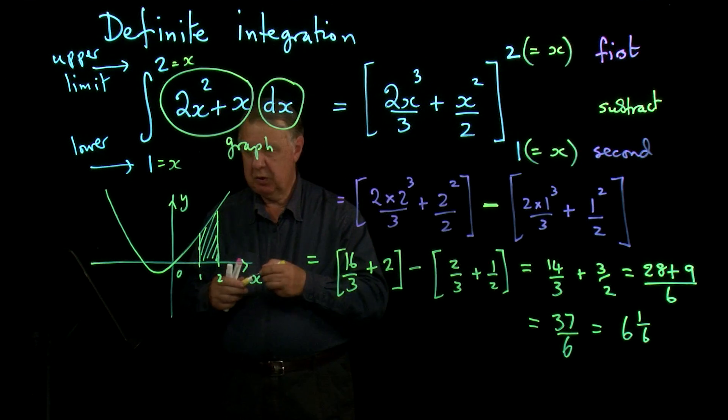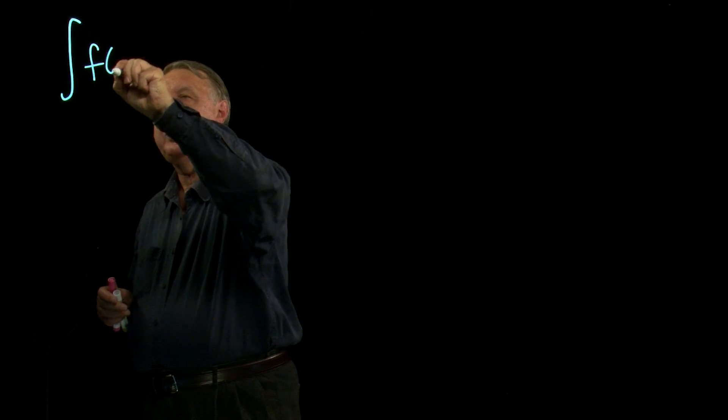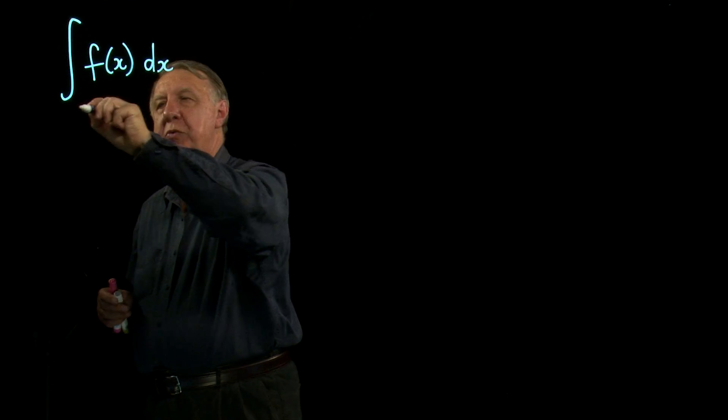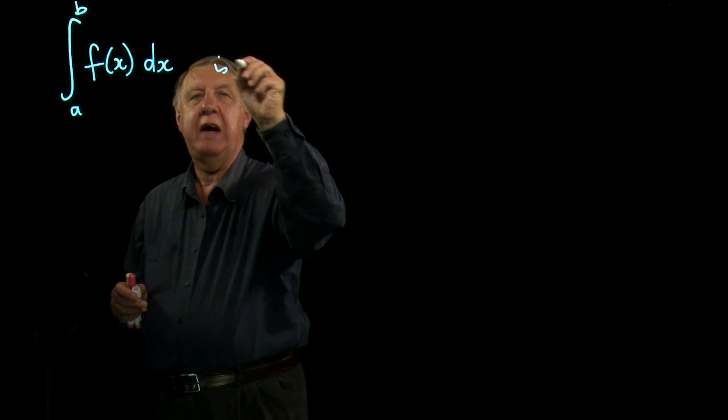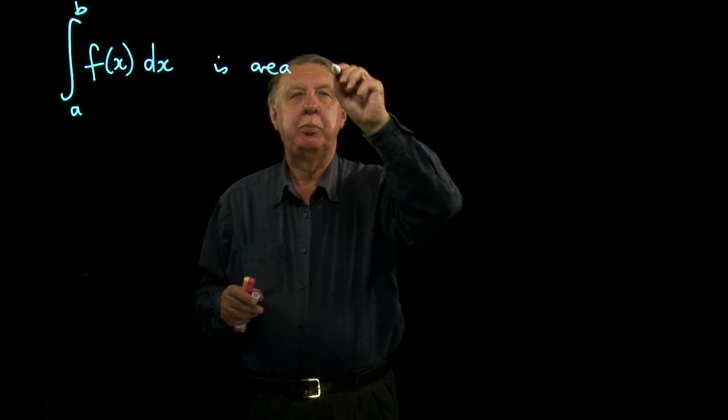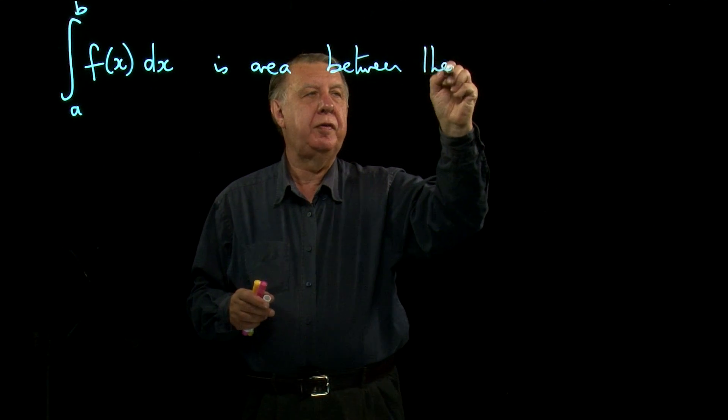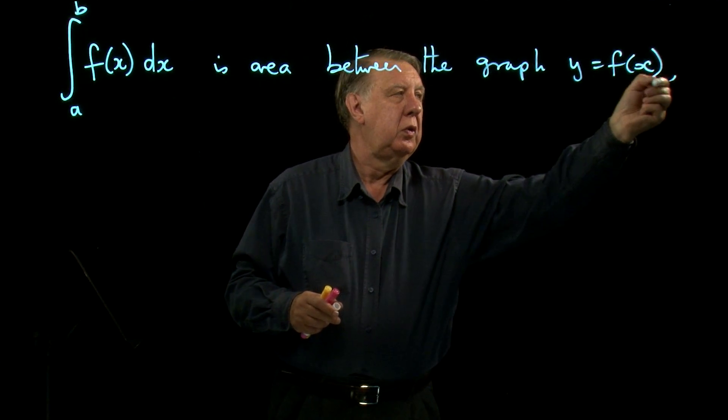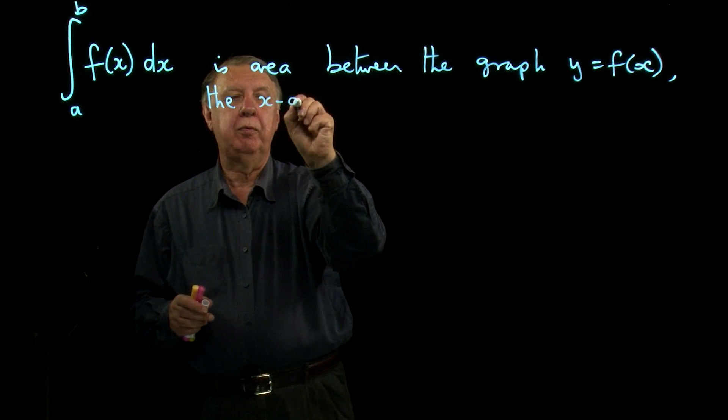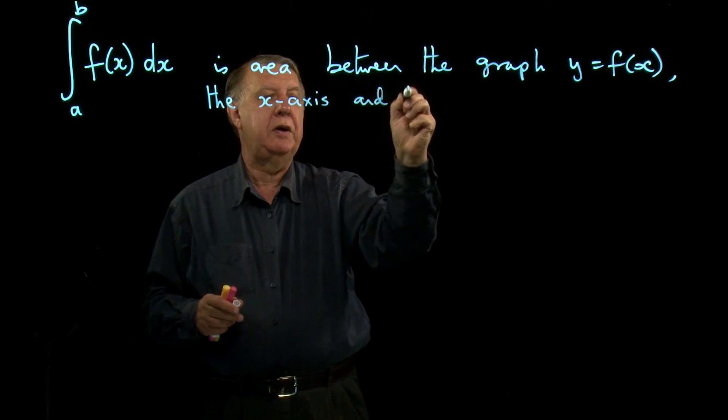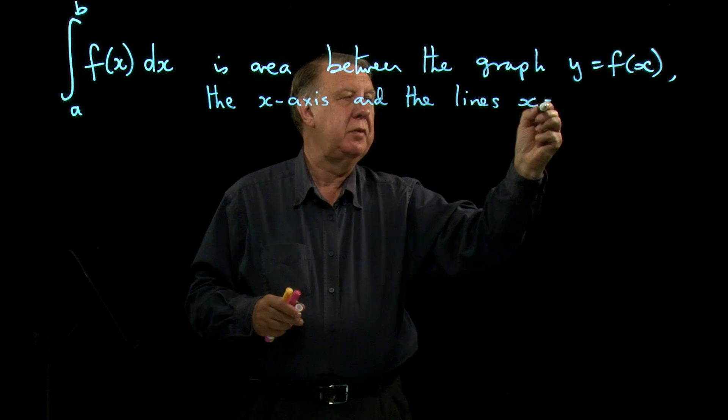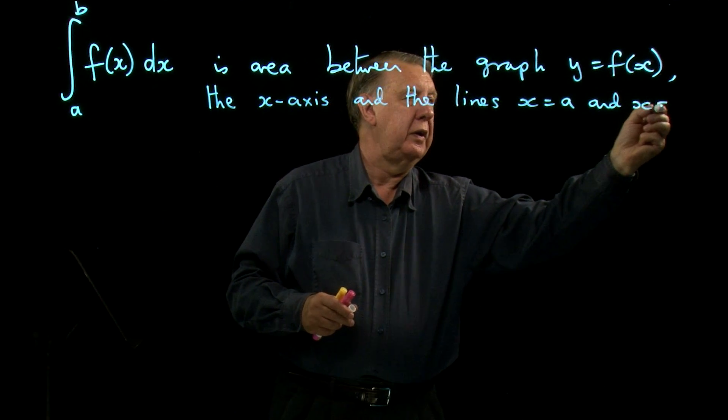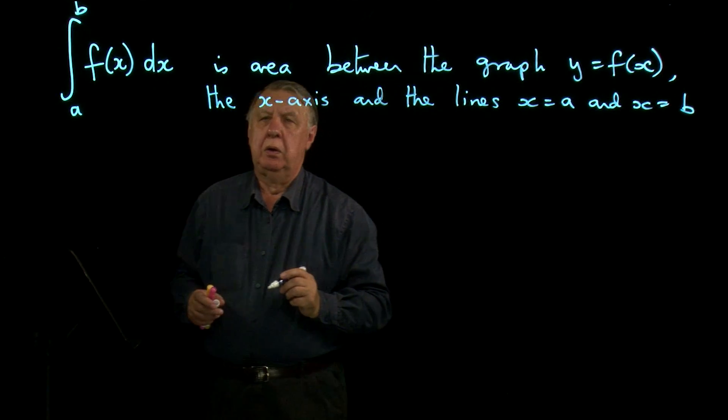So the method looks pretty easy. Let's just write a little summary of that at the moment before we try the next example. What I've done then I'm saying that if I work out the integral of a function of x between a and b, this is the area between the graph y equals function x, the x-axis, and the lines x equals a and x equals b.